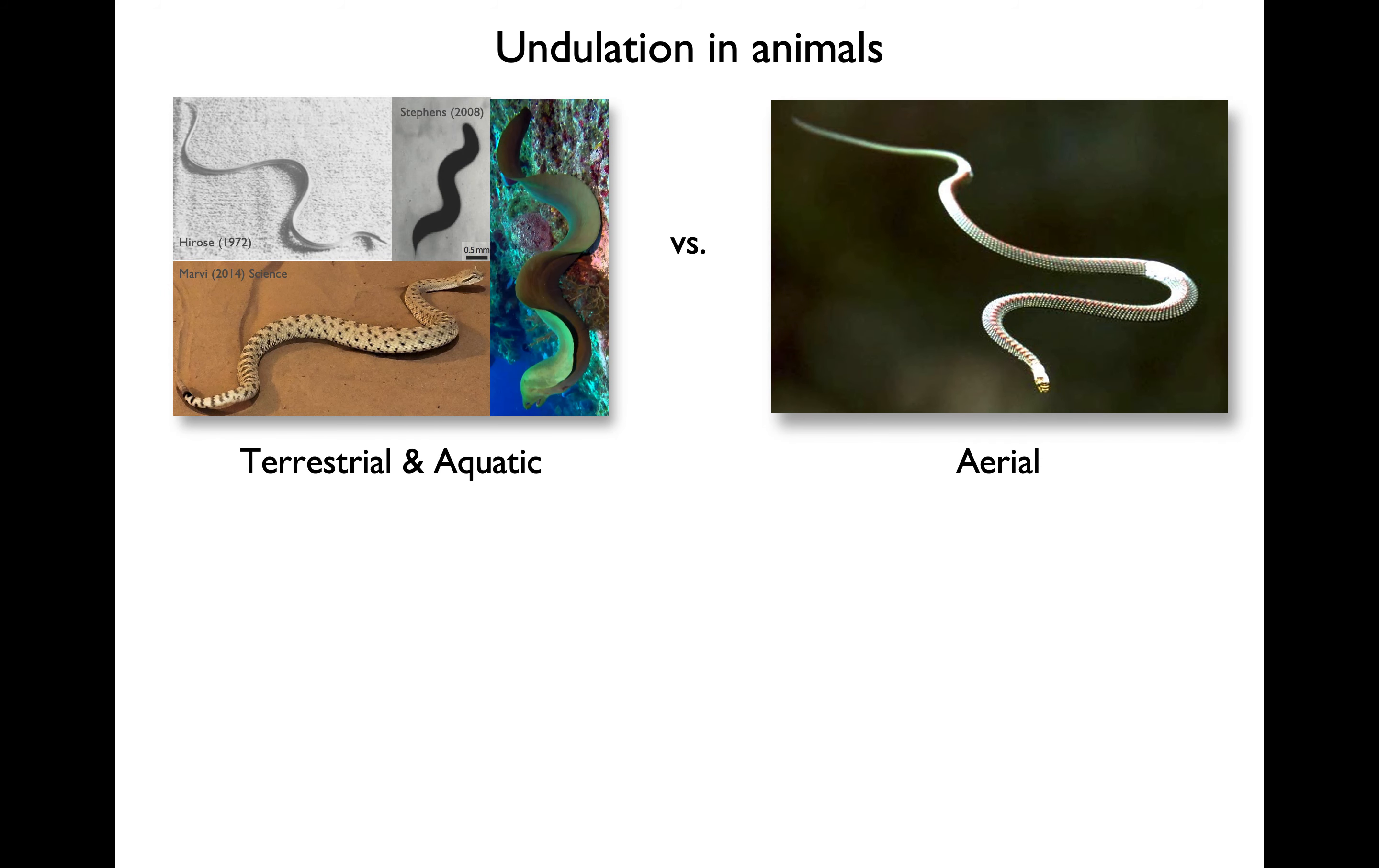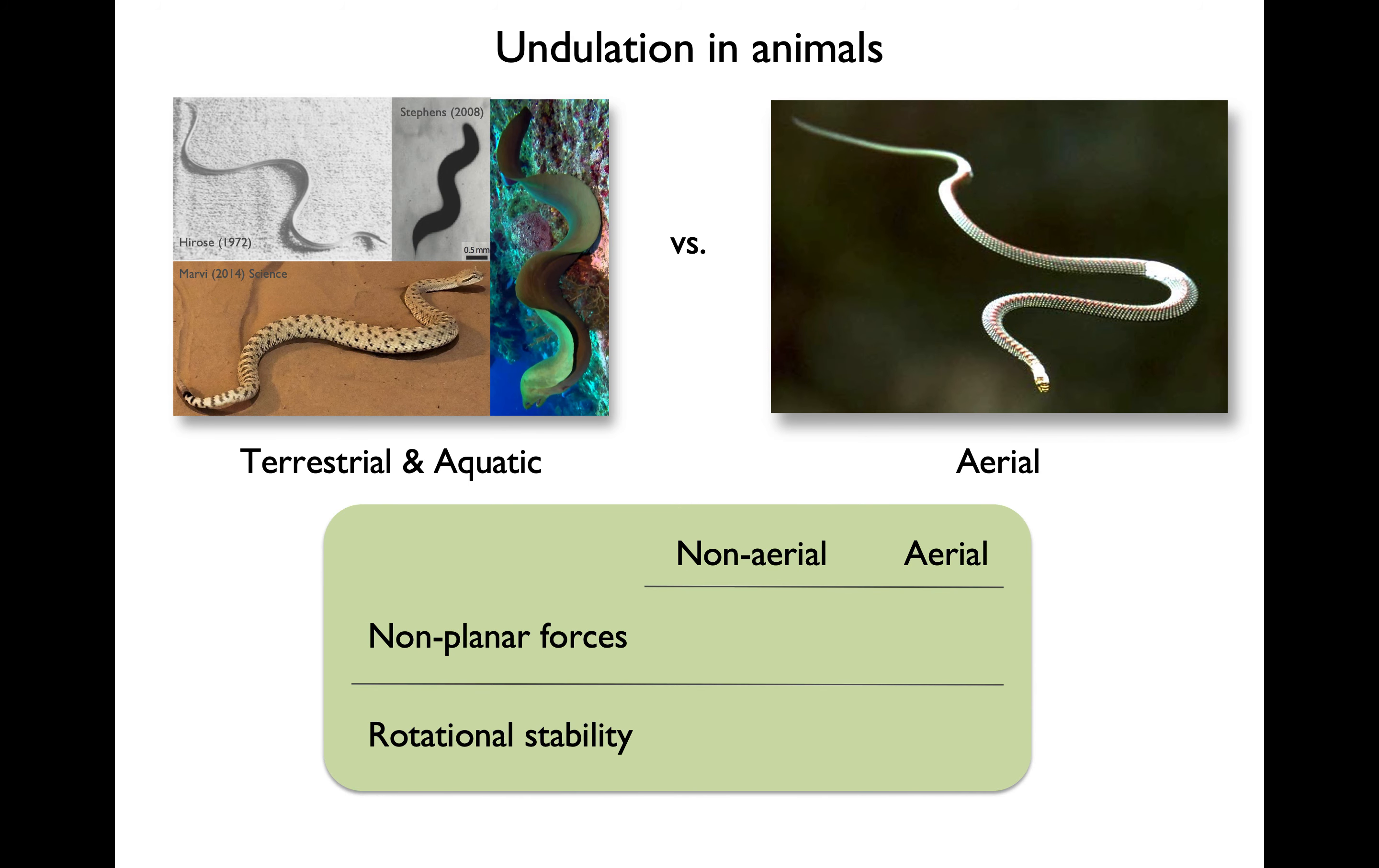Many of us are familiar with animals that undulate in water and on land. However, flying snakes are the only animals that undulate through air. And because the fluid medium is different, we expect the physical considerations on locomotion to be different.